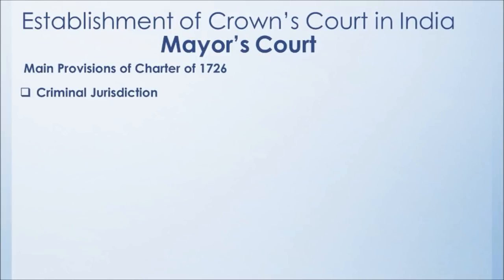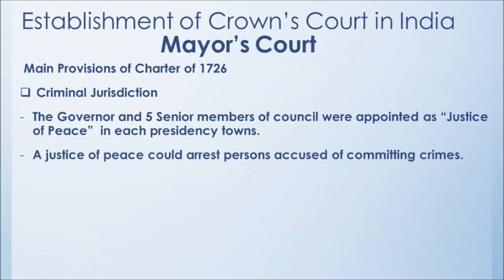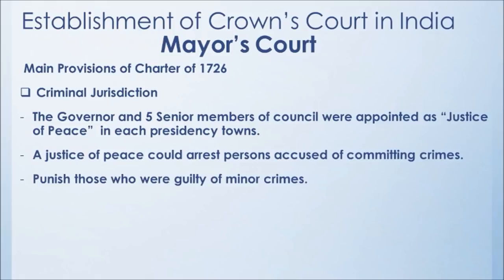The third provision relates to criminal jurisdiction. The Governor and five senior members of the Council were appointed as Justices of the Peace in each presidency. A useful tip: wherever you see 'Justice of the Peace,' it relates to criminal matters. The Justices of the Peace could arrest persons accused of committing crimes, and could punish those guilty of minor crimes themselves.